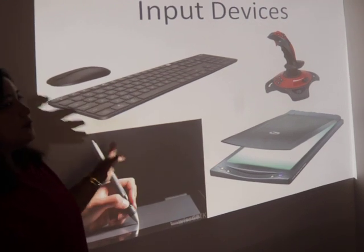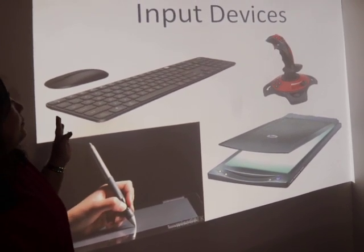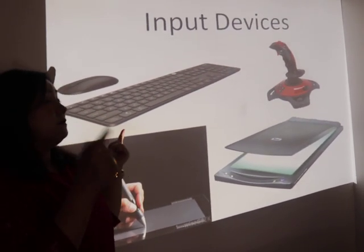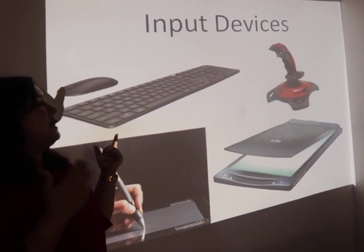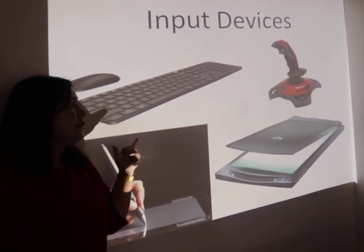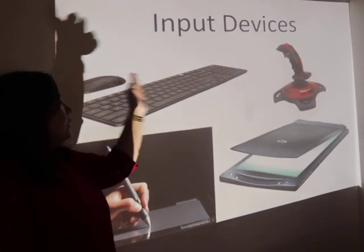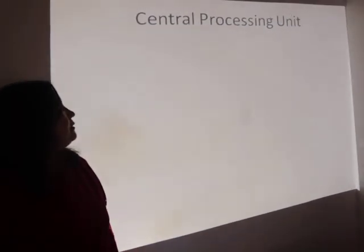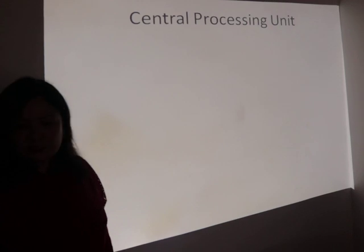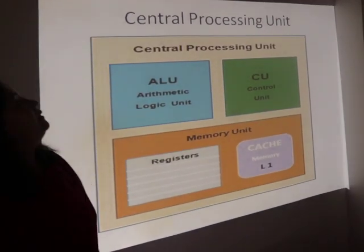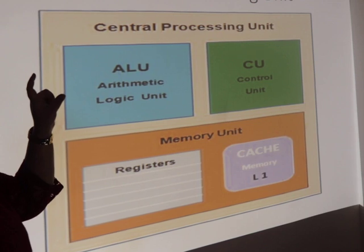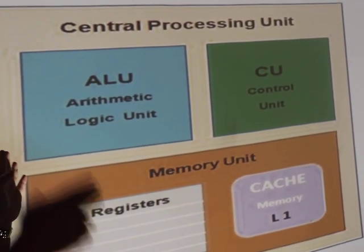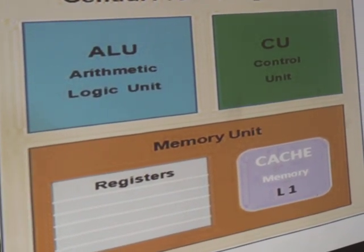These are the devices used to feed data and instructions into the computer. Another job of the input device is to convert human-understandable data and instructions into binary or machine language that is understood by the computer. After the user enters the data, we come to the processing part — the central processing unit or CPU. CPU is also known as the brain of the computer because it is responsible for all the data and instruction processing that happens in a computer.